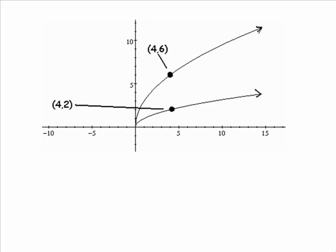So 2 times 3 is 6. So you could say that 4, 2 is transformed into 4, 6. And every point on the original curve would have that effect. The x-coordinate is unchanged. But the y-coordinate is multiplied by 3.